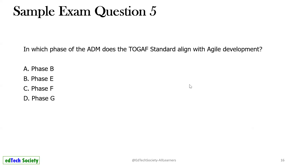Question 5: In which phase of the ADM does TOGAF align with agile development? This question can be tricky — it's not proper agile as we use in daily life, but as TOGAF suggests, it is Phase G that aligns with agile development.